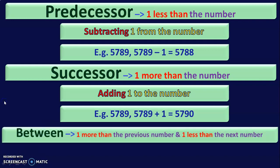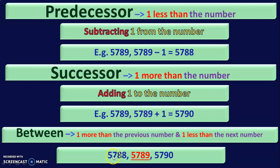Let us see how to find the between number. The between number will be 1 more than the previous number and 1 less than the next number. I have given the numbers 5788 and 5790 with a blank in between. The between number will be 5789. This 5789 is 1 more than 5788 and 1 less than 5790. These are called between numbers.